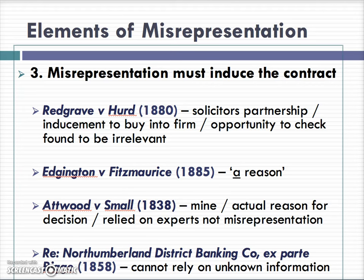In Atwood v Small, Atwood purchased a mine from Small. Small had stated that the mine produced a certain output and offered that Atwood could check the statements and documents of the mine to verify this. Atwood went ahead and hired an accountant to have a look at those statements. The accountant didn't spot any errors and so the transaction went ahead. Afterwards, it was discovered that those numbers were false. However, there was no actionable misrepresentation because Atwood had relied on his own accountant and not on what Small had said.